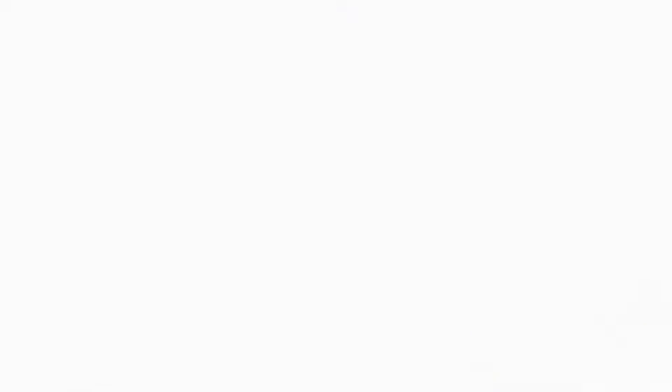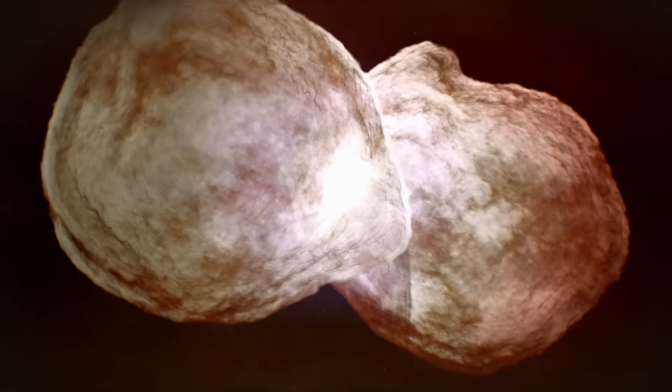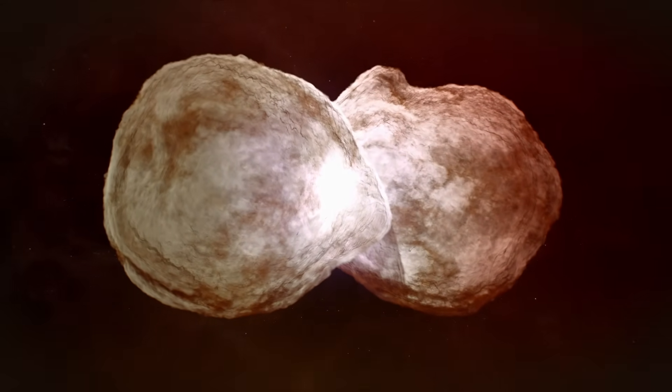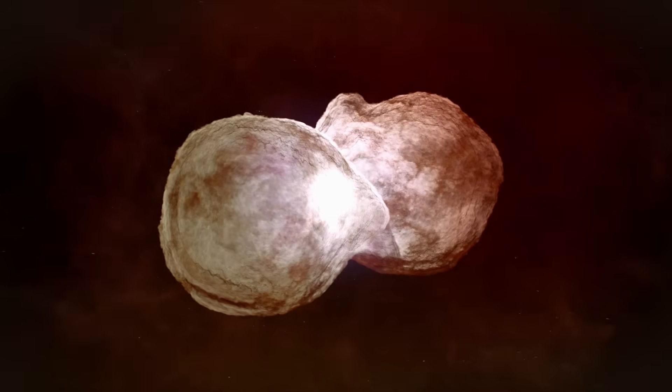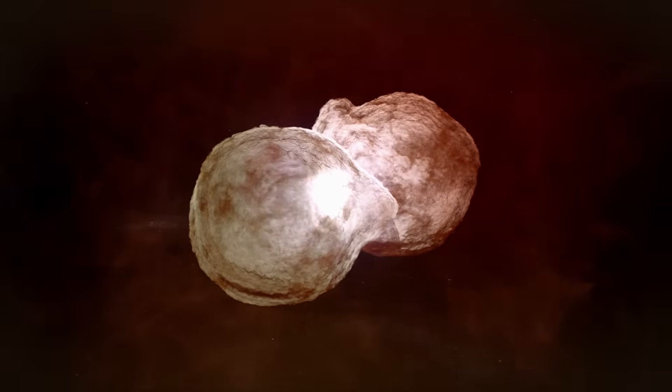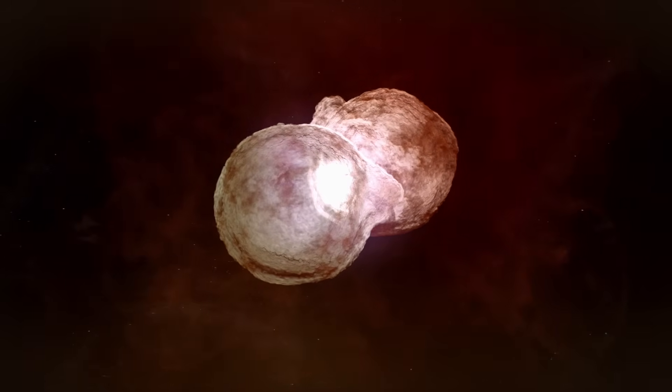Eta Carina is one of the closest and most massive colliding wind binaries, and serves as a natural laboratory for studying these rare and important objects. While its past eruptions remain unexplained, astronomers think they have a handle on its current state, a claim to be tested at the next periastron in February 2020.